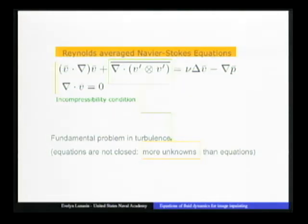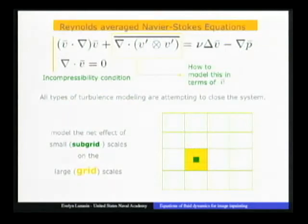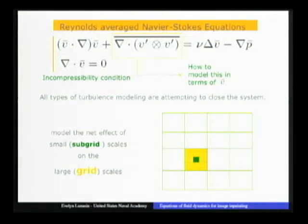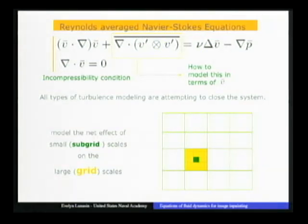We would like to write the fluctuation term in terms of V-bar. In a more physical interpretation, turbulence modeling answers the question of how we can capture the phenomena of turbulence without resolving down to the Kolmogorov length scale — we want to accurately model the net effect of the small subgrid scales onto the large grid scales.